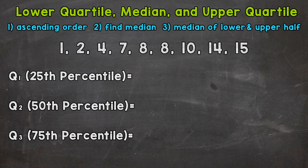For this example, we have nine numbers in our data set, so the middle is going to be the fifth number. That gives us four numbers on the left and four numbers on the right. The fifth number is this eight right here — that's going to be our median. So let's put eight for quartile two, the 50th percentile, or the median.